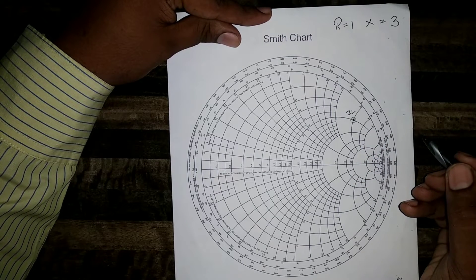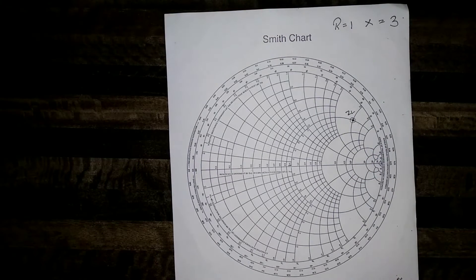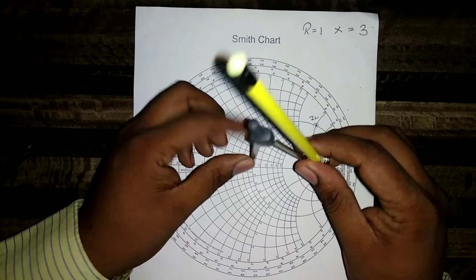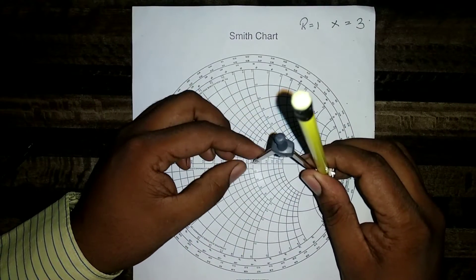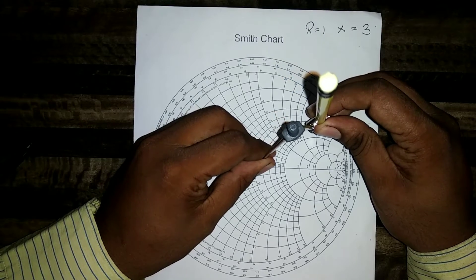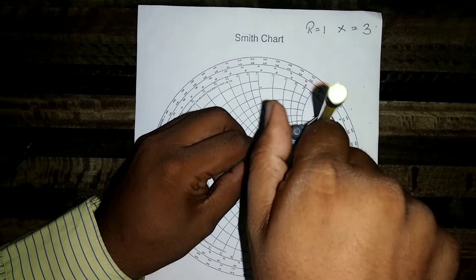This point is my ZL. Now take a rounder. Keep it at the center of the Smith chart. And take the distance equal to ZL from center to ZL and draw a circle.